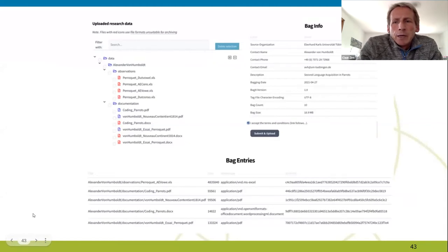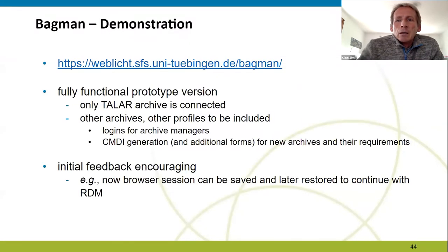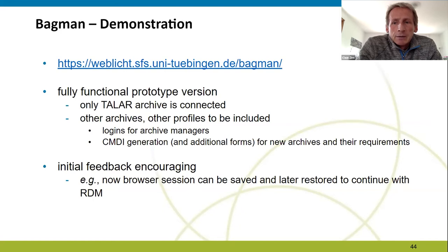Bagman provides a visualization of a file tree of the uploaded research data, shows the bag that has been created, and shows a table where each file is associated with a checksum unique to that file's content. The main selling point for Bagman is probably the automatic generation of CMDI metadata from all the data supplied by the user via web-based forms and the uploaded files. There is no direct editing of CMDI in Bagman. Bagman also doesn't enforce that all web forms are filled out — there is mandatory information, but also optional forms. Archive managers benefit because they can run a single script to verify they have received all content in a complete and uncorrupted manner.